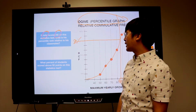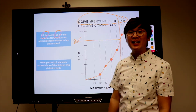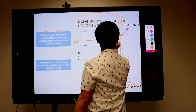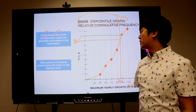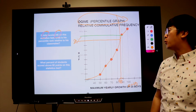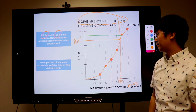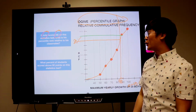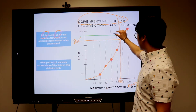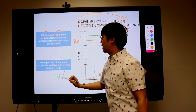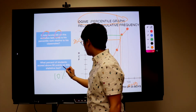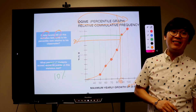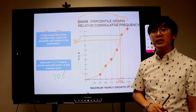Next question: what percent of students scored above 90 points on this statistics test? So 90 points is somewhere here on the graph, and above it is somewhere here. To answer the question, about 10% of students in this class of 40 scored above 90 points, because it's asking above 90 points.